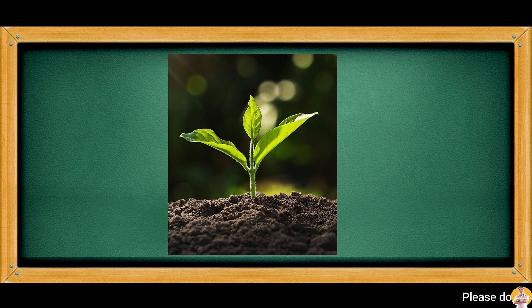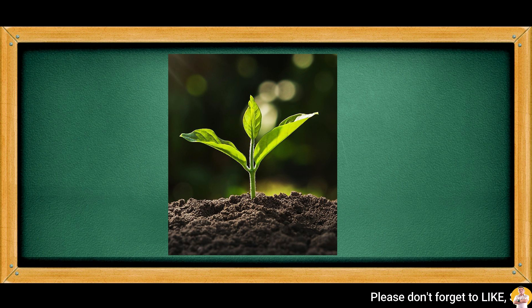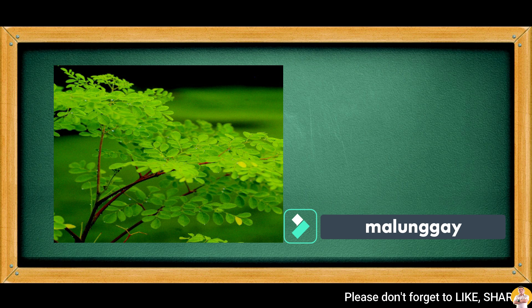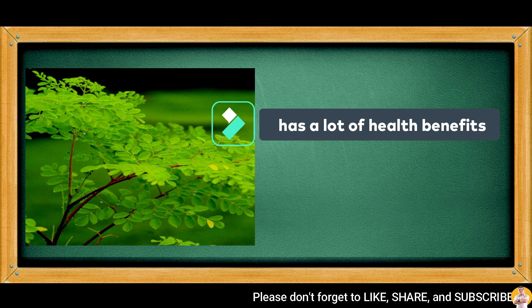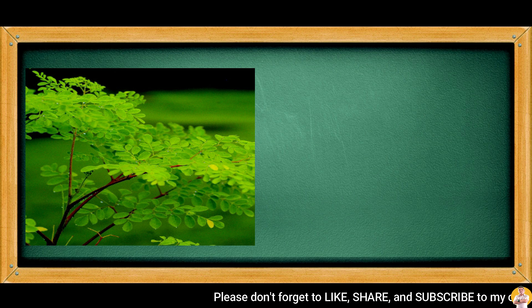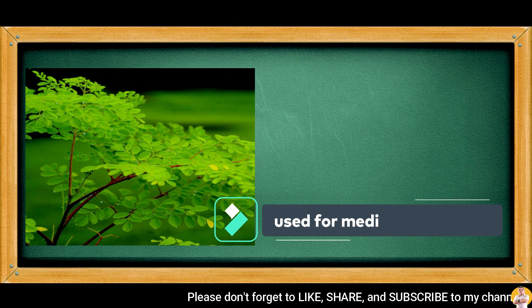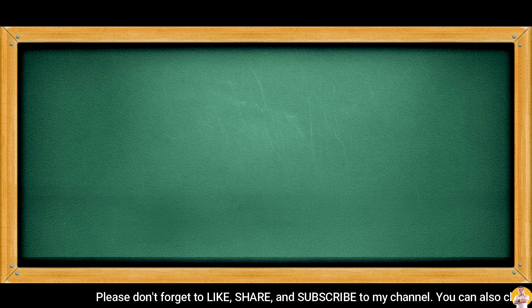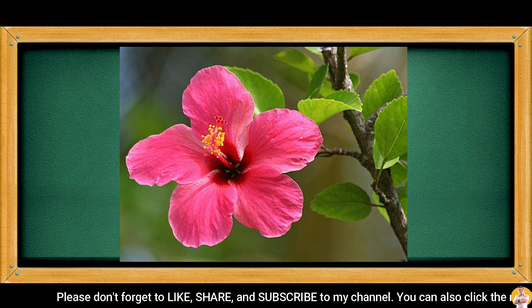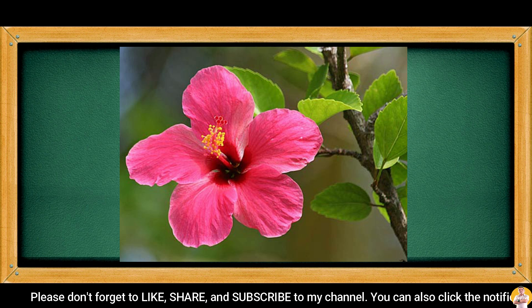Plants have many ways on how to reproduce, and some of their parts are used to produce their own kind. Malungay is a common plant found anywhere in the community. It has a lot of health benefits based on different studies, and its parts are used for medicinal purposes. The flower is an accessory organ of the plant used in sexual reproduction.